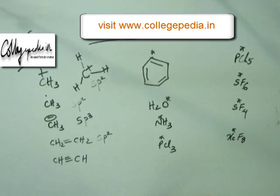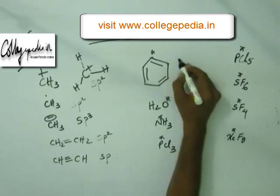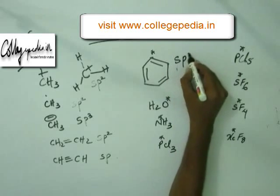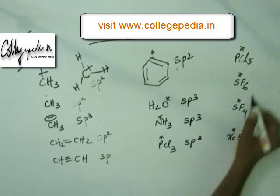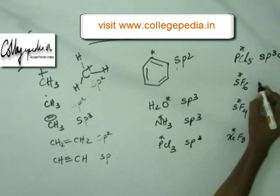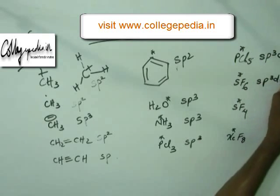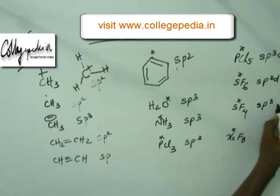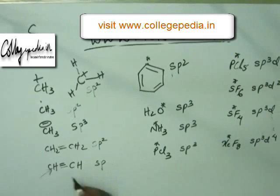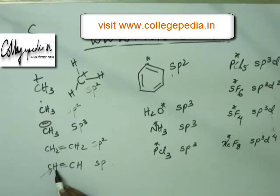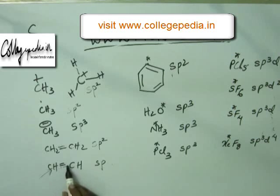I hope you have worked out your answers — now let's match them. I will quickly write the answers and explain as well. If you look at this carbon in this compound, you'll find that the carbon is making one sigma bond with hydrogen, and with the other carbon it is making three bonds. As we've already seen, the first will be sigma, the second will be pi, and the third will be pi.